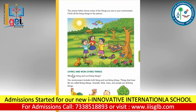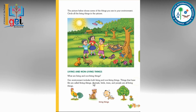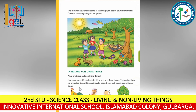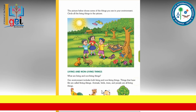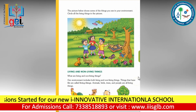Our environment includes both living and non-living things. Things that have life are called living things — like animals, birds, plants, trees, and people. All around us: hens, cats, babies, trees, dogs, insects, birds, reptiles — whatever has life is called a living thing.